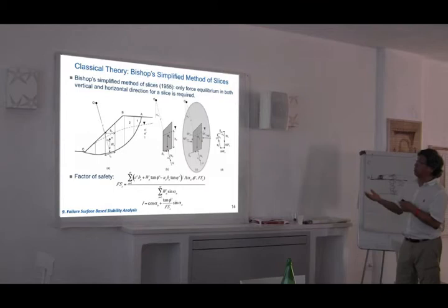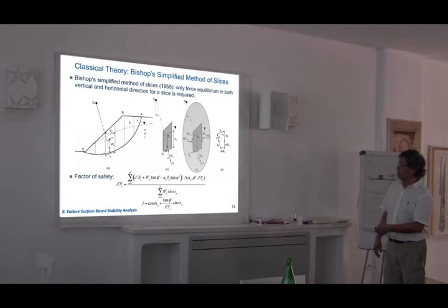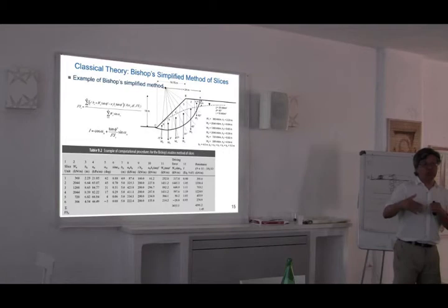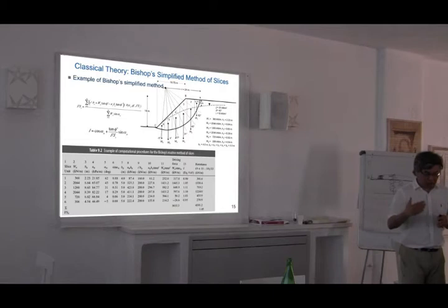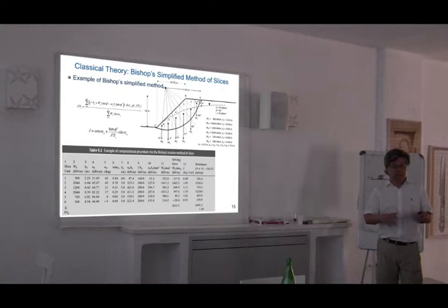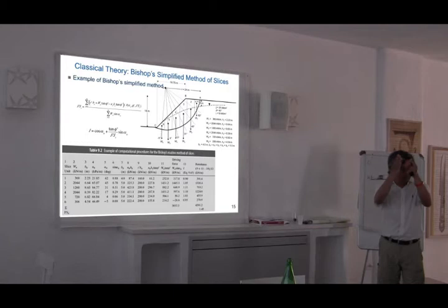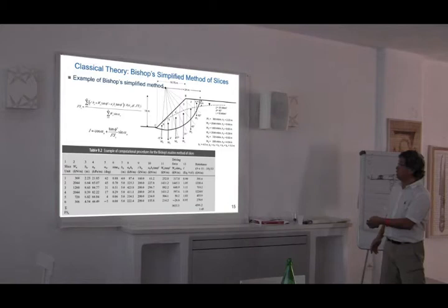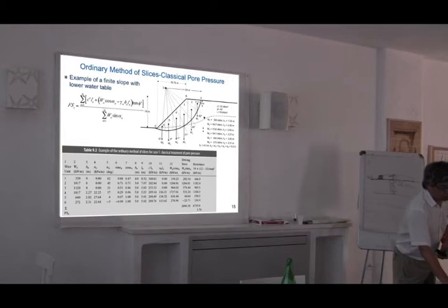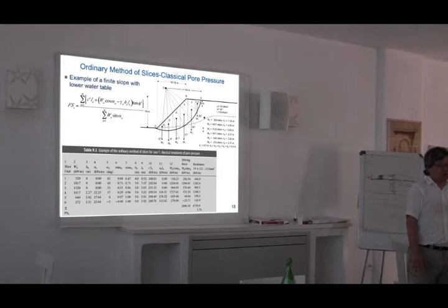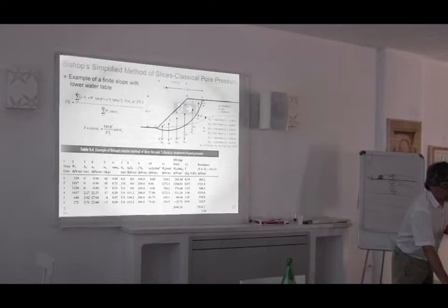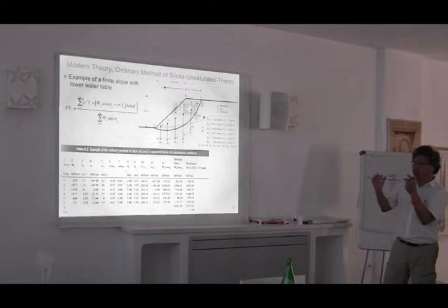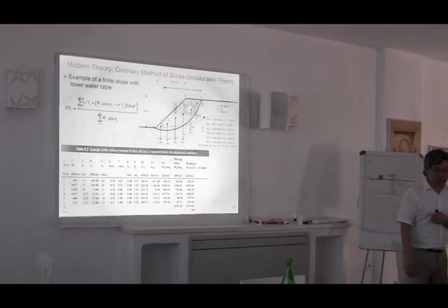The Bishop method is similar but considers inter-slice forces more carefully, giving a slightly higher factor of safety for the same slope. Today, many commercial geotechnical design packages calculate stress using finite elements, then feed those stresses into the slice algorithm — the same kind of algorithm — to search for the minimum factor of safety slope. But this is still under the paradigm of one slope, one failure surface, assuming all slices fail instantaneously at the same moment.